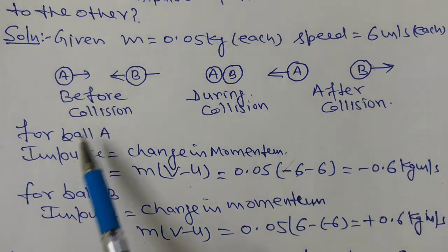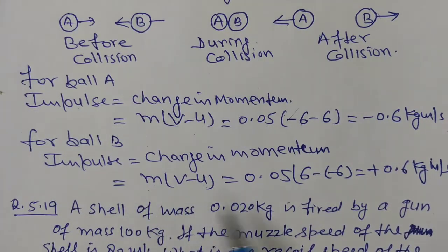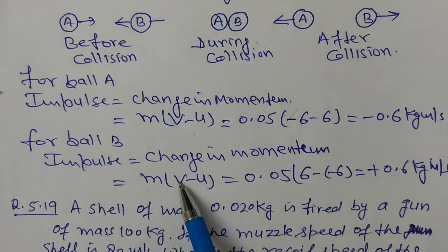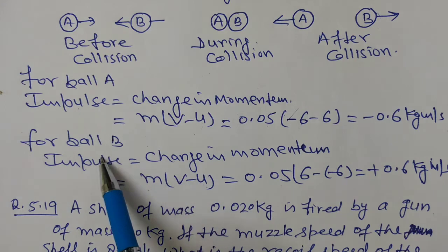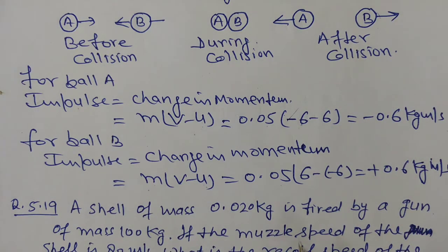So this is how we calculate ball A's impulse. Now similarly for ball B, impulse equals change in momentum. Final momentum minus initial momentum, mass of the ball times final velocity of B, which is along positive x-axis, therefore this is plus 6.